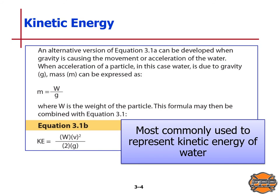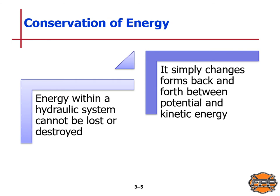This is an alternative version of Equation 3.1, and it can be developed when gravity is causing the movement or acceleration of water. It is M equals W over G. Regarding conservation of energy: energy in a hydraulic system can neither be created nor destroyed — it simply changes forms back and forth between potential and kinetic energy. Total energy equals potential energy plus kinetic energy, and this is the principle of conservation of energy.